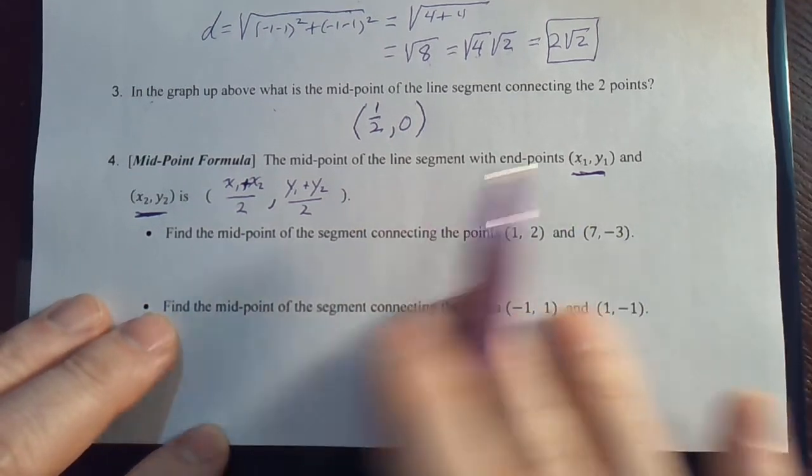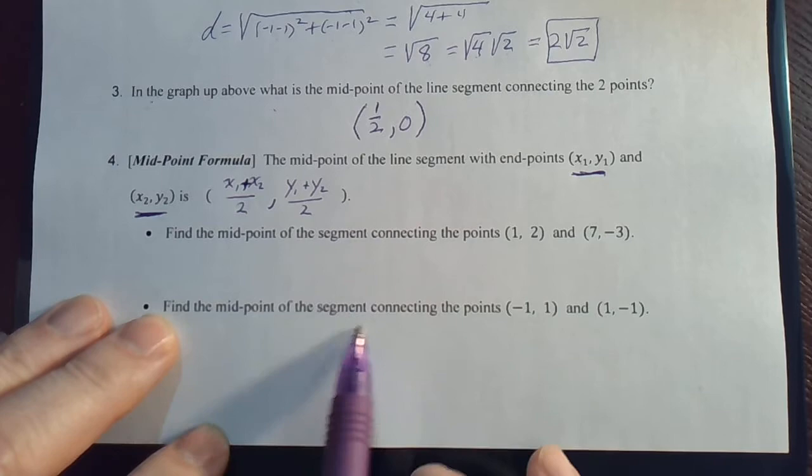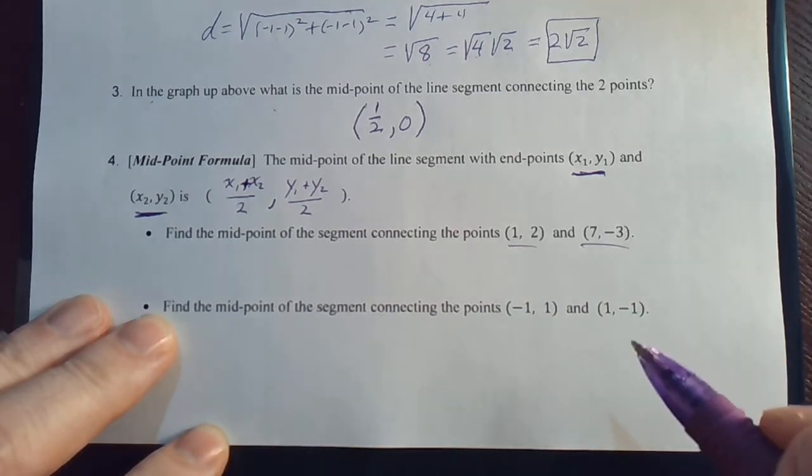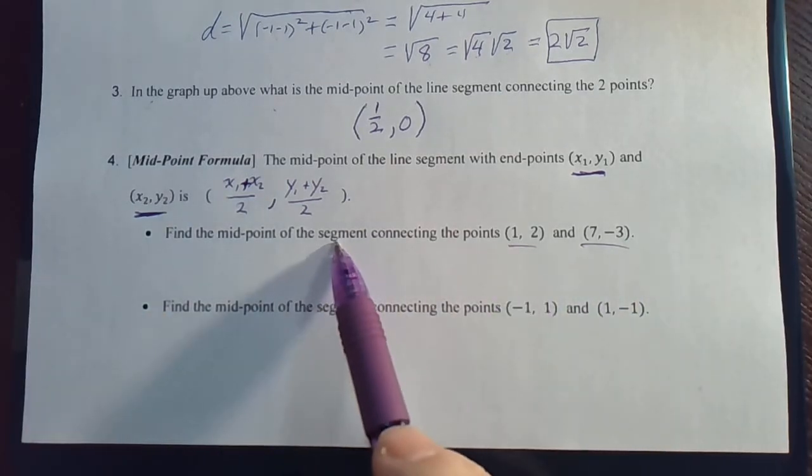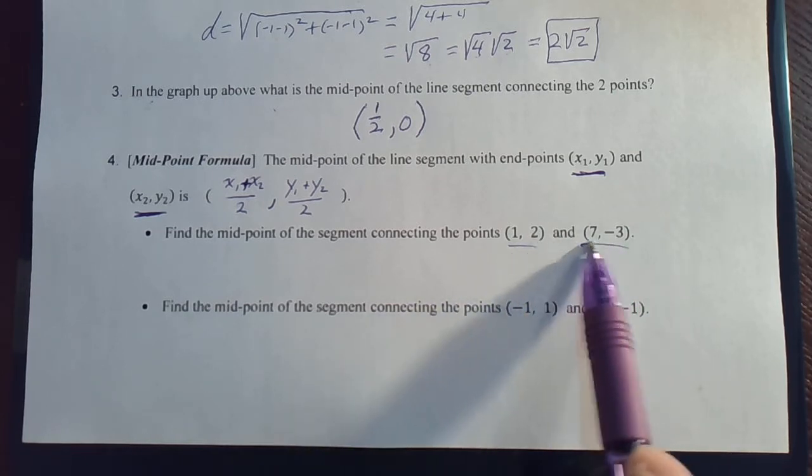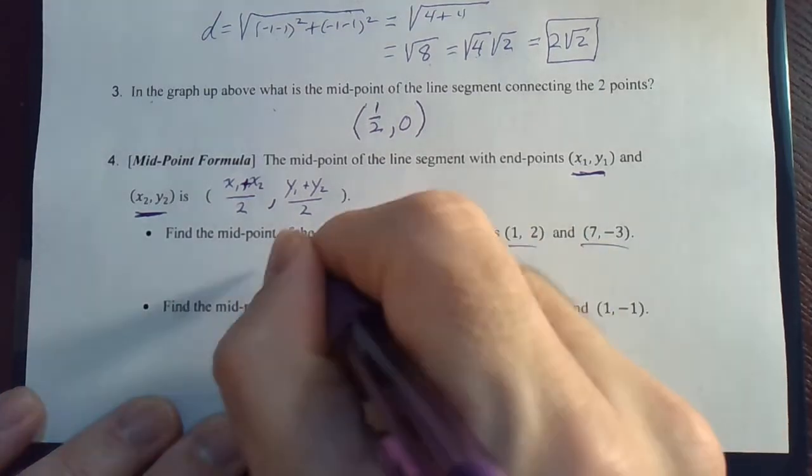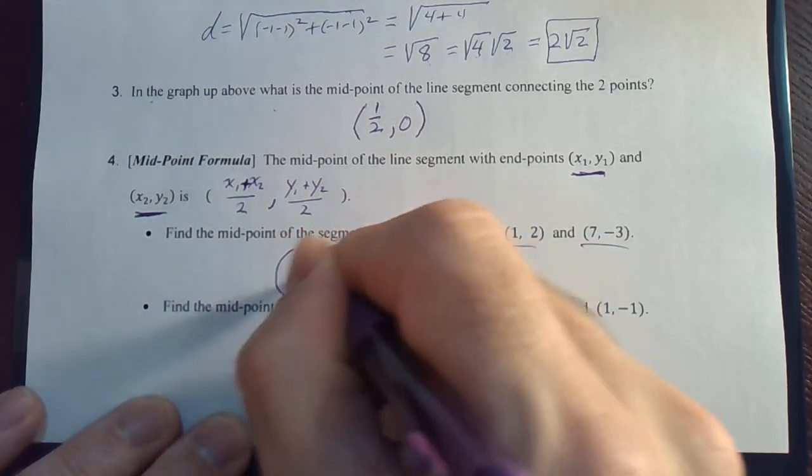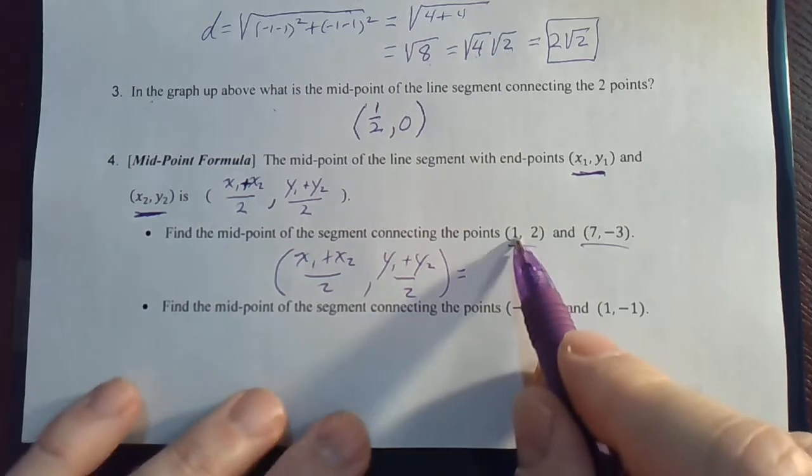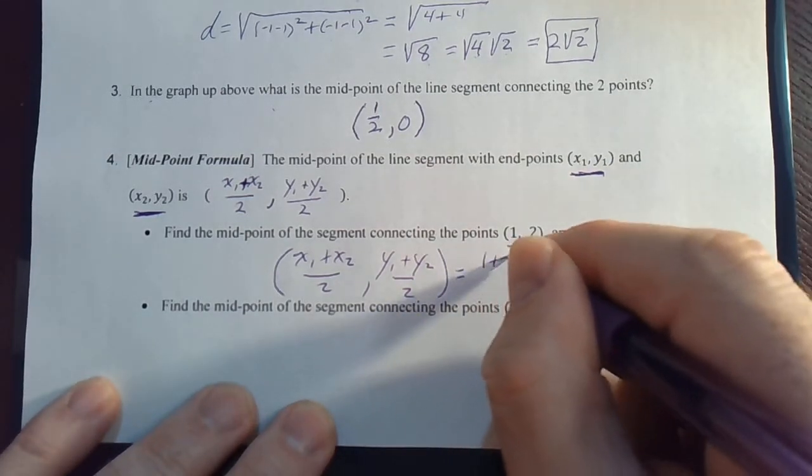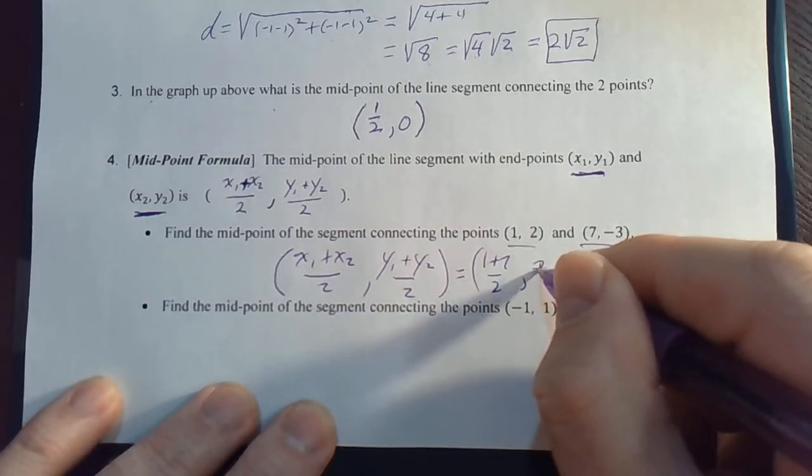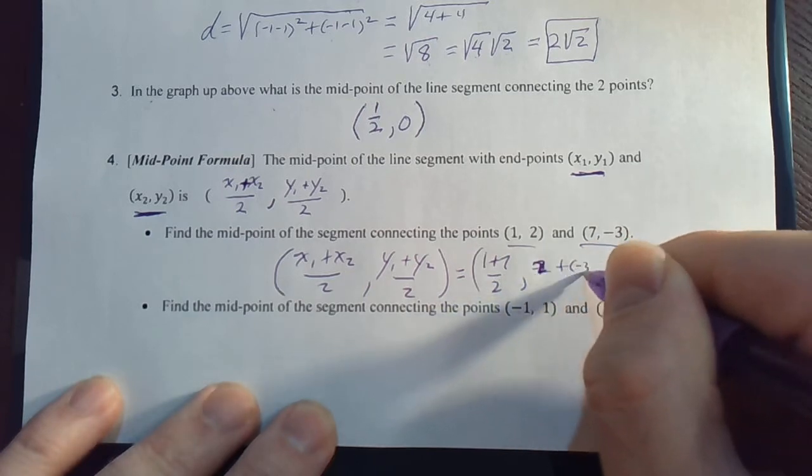Again, all we can do is use this formula. And so, we've got just a couple of examples. Find the midpoint of the segment that connects this point to that point. And I may just say sometimes, I may ignore the word segment, I may just say find the midpoint of these two points. Which point is right in the middle? So, for us, it's going to be, maybe I'll write it down one more time, x₁ plus x₂ over 2, y₁ plus y₂ over 2. And for us, that's going to be 1 plus 7 over 2, comma, 2 plus negative 3 over 2.